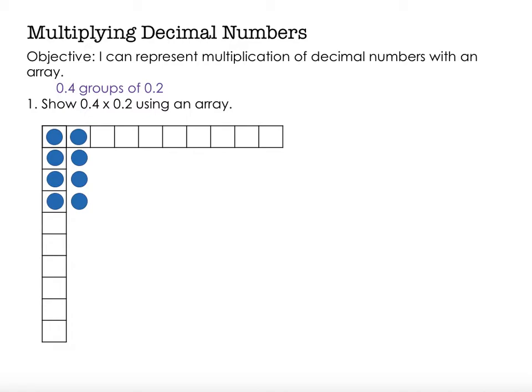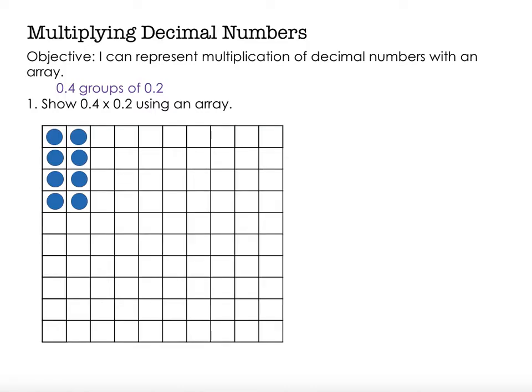So now, if I go ahead and continue filling out the rest of that grid and making a full-size array, I have 100 squares inside of that grid that I just created.